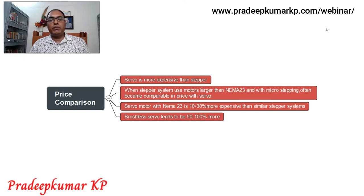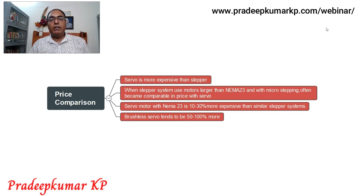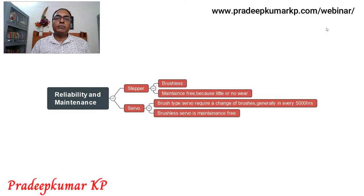For a NEMA 23 frame size, if you take a similarly sized servo and stepper motor, the price difference is around 10 to 30 percent. If the servo motor is a brushless type, the price tends to be more — it may become 50 to 100 percent more than the stepper motor.